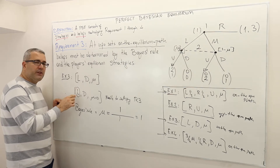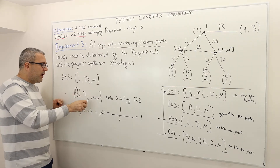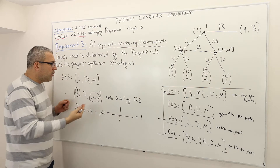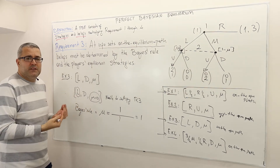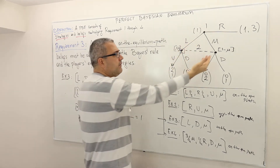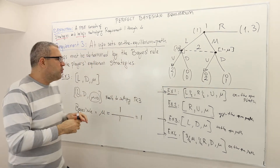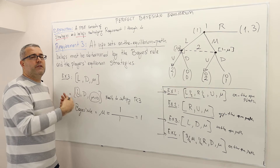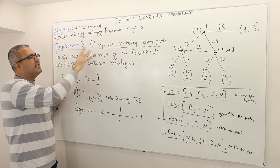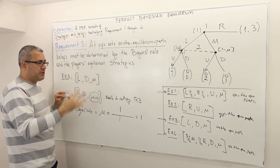If we interpret the strategy as player two's belief that player one plays left, she's also holding a belief about which decision node she's at. Obviously, I want them to be consistent with each other — you cannot believe your opponent is going to play left but at the same time believe you will end up at the other decision node. These two beliefs are inconsistent, so those inconsistent beliefs shouldn't be part of an equilibrium. That's why we incorporate Bayes' rule into the equilibrium concept — beliefs must be consistent.